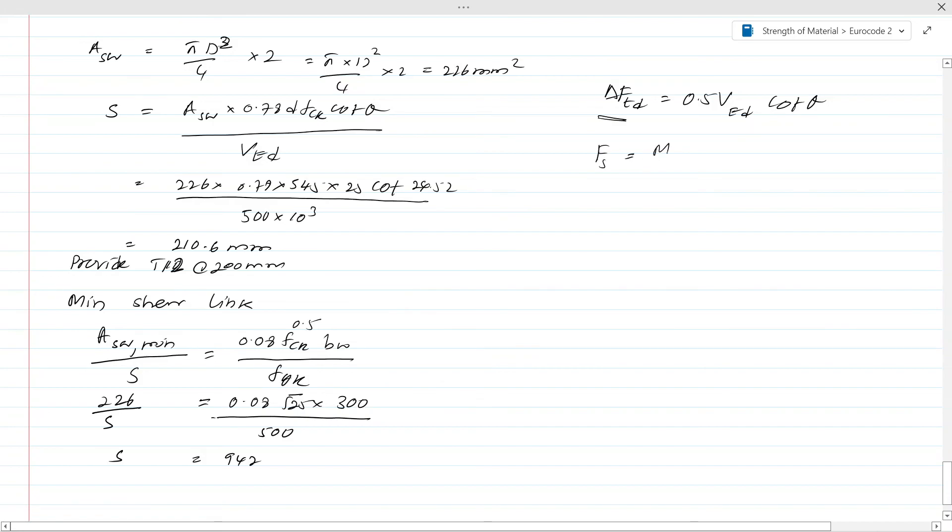So the total force in the reinforcement bar becomes M_Ed / z plus ΔF_td. Both of these you have to consider. This comes from the reinforcement design and this comes from the shear reinforcement design. This total force you have to consider when you're doing the curtailment and reinforcement anchorage.